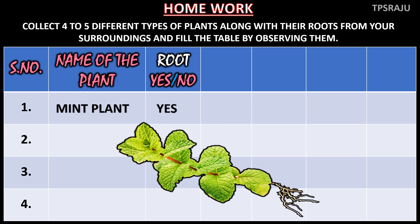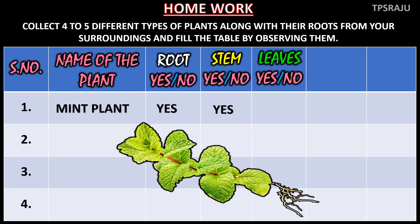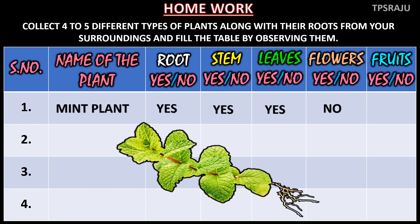Likewise, in the fourth column, stem — yes or no. Mint plant has stem, so I am writing yes. In the fifth column, leaves — it has leaves, so I am writing yes. In the sixth column, flower — it does not have flower, so I am writing no in the first row. In the seventh column, fruits — yes or no. It does not have fruits, so I am writing no.